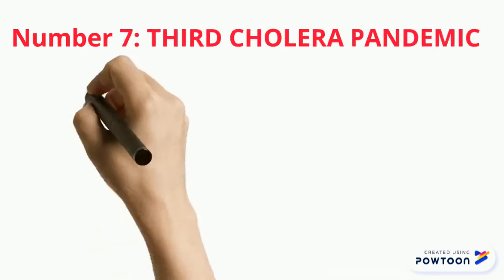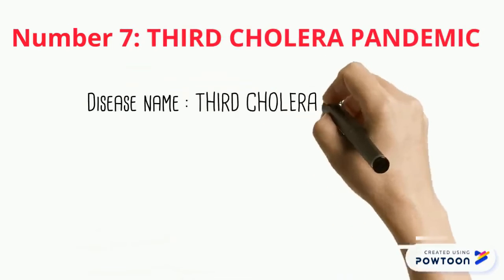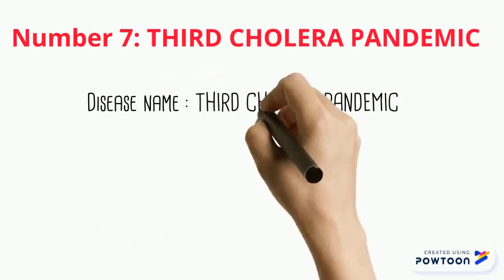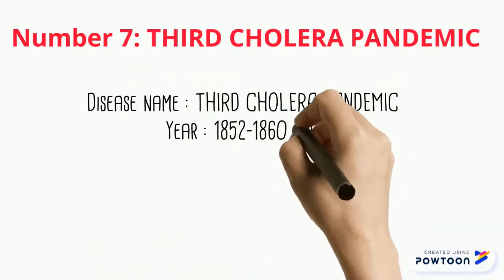Number 7 is the Third Cholera Pandemic of the 19th century, which lasted from 1852 to 1860. It originated in India and claimed around 1 million lives.